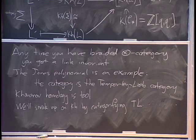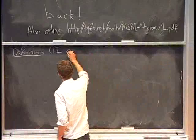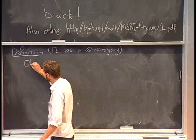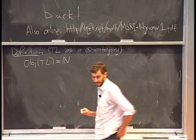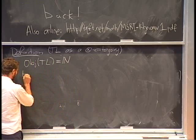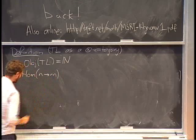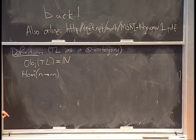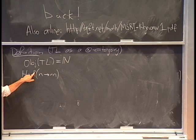Let's define Temperley-Lieb as a tensor category. The objects of Temperley-Lieb are just the natural numbers. Now hom from N to M — I'll write a little open circle next to this hom. This symbol is meant to remind you of the symbol people usually use for composition. Later, once we're categorifying, there'll be two different compositions going on, so I'll use a hollow circle for one direction and a filled-in circle for another direction.